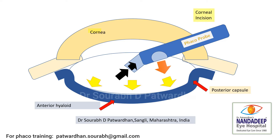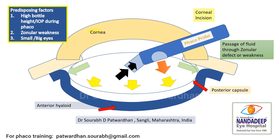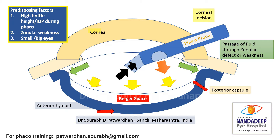It is commoner than you think. When we start doing FECO, we are pushing a lot of fluid in the anterior chamber to keep it maintained. But in certain cases such as those with zonular weakness, small or big eyes, and particularly if you are using very high bottle height or high IOP during FECO, this fluid seeps through weak zonules or zonular defects and passes into the potential space between the posterior capsule and anterior hyloid. Even if it is not detached before, sometimes during surgery this space may be created because of anterior hyloid detachment.